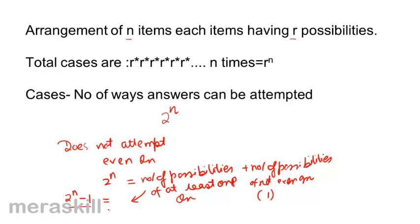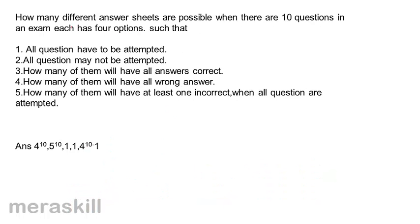This gives the number of ways in which at least one of the n items is chosen. Now let's move to examples to consolidate what we've learned. Example: how many different answer sheets are possible when there are 10 questions in an exam, each having four options?